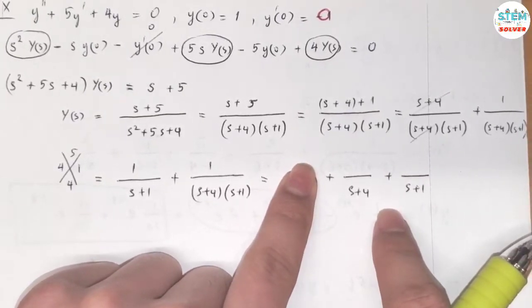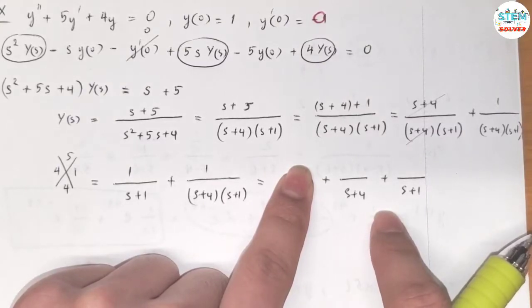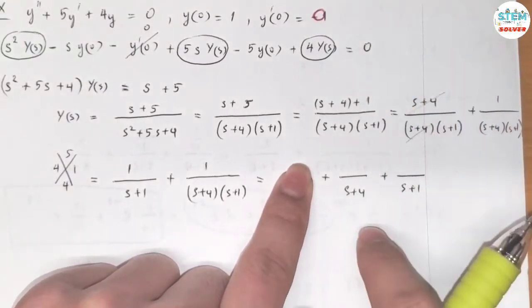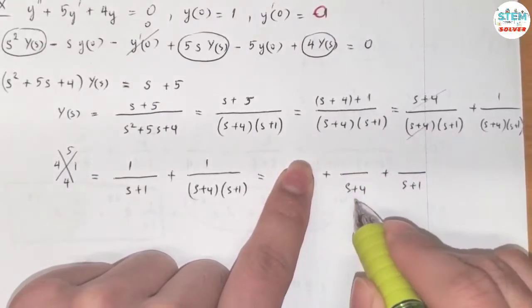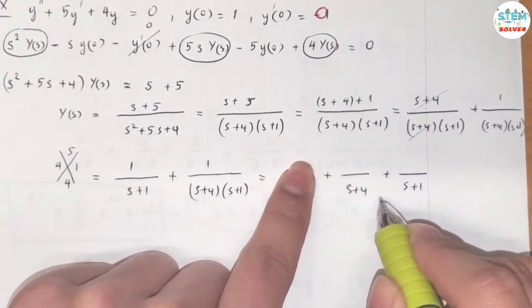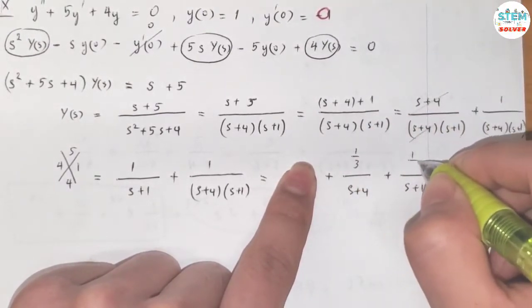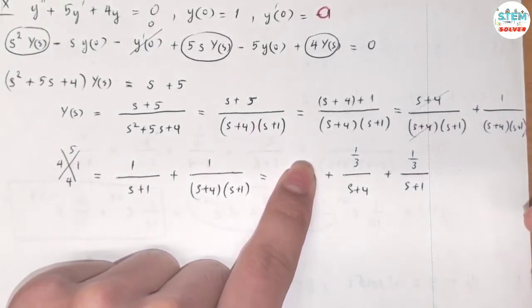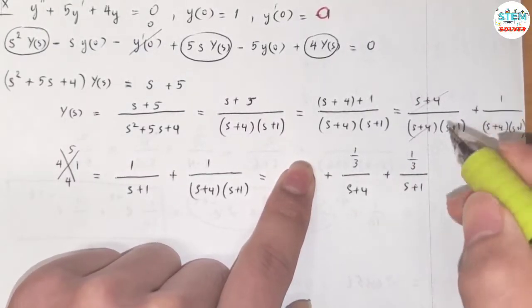I'm going to use a shortcut to find partial fraction decomposition here. If you haven't had a chance to watch the video that I made about finding partial fractions in less than 30 seconds, I'll put the link in the upper right corner. You can see they are off by 3, so I'm going to have one-third on the numerator.